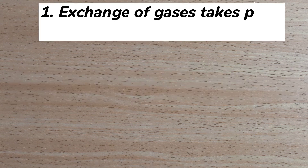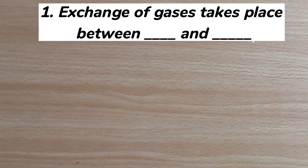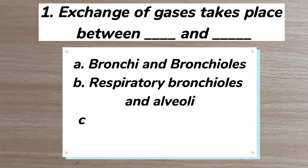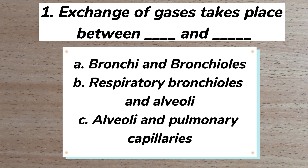Number one: exchange of gases takes place between dash and dash. A) bronchi and bronchioles, B) respiratory bronchioles and alveoli, C) alveoli and pulmonary capillaries. The correct answer is C: alveoli and pulmonary capillaries.